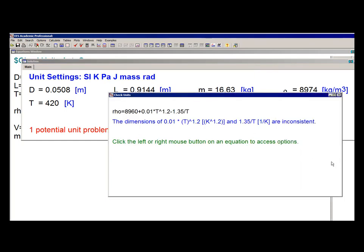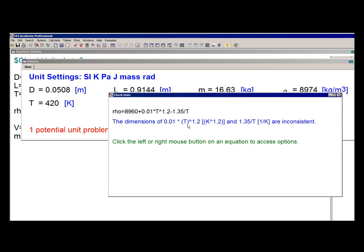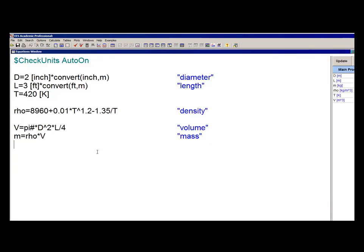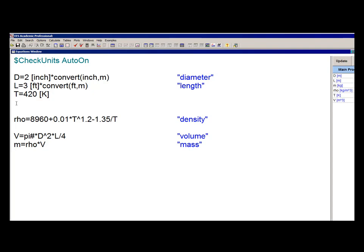And the reason I get this unit warning is because this curve fit includes a bunch of coefficients. And these coefficients each have units. And I don't really want to figure out and assign the units of each of these coefficients in order to get rid of this warning. And so this is a case where I'd really like to disable unit checking not for the entire equation window, but certainly for this one equation.